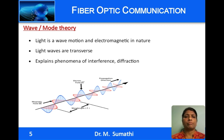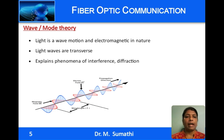Therefore, wave theory was proposed. Wave motion was described in detail by Huygens and later supported by Fresnel. Light is considered to be a wave motion, and Maxwell suggested that these waves are electromagnetic in nature — made of electric and magnetic fields — and they are transverse, that is, the electric and magnetic fields are in a direction perpendicular to the direction of propagation of the light wave. Wave theory could explain the phenomena of interference and diffraction.